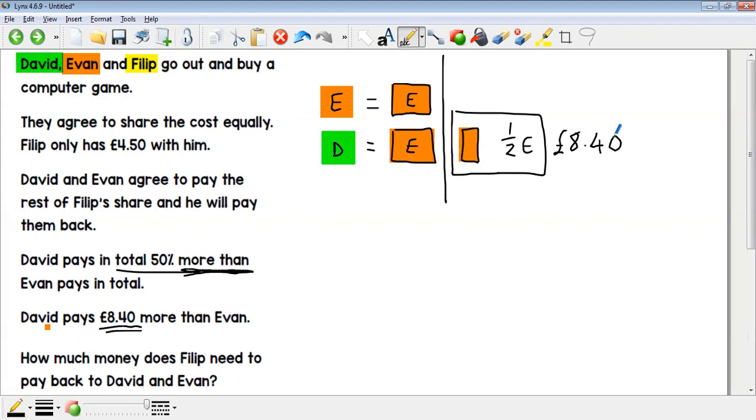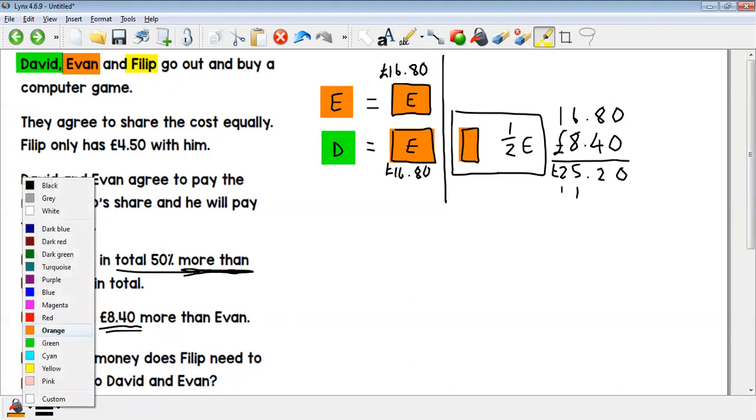So if I know half of what Evan's got is worth £8.40, to find out what Evan is worth I can double that to make £16.80. So that's what Evan has to pay. And then David is going to be £16.80 added onto that £8.40, like so. David is £25.20.